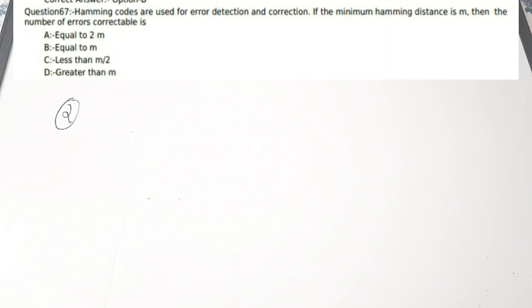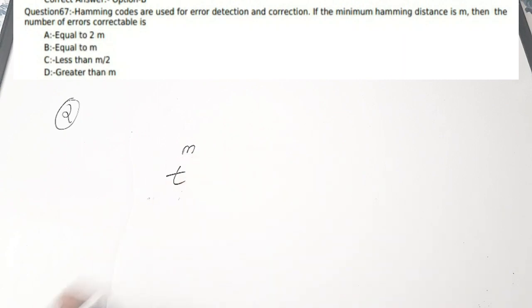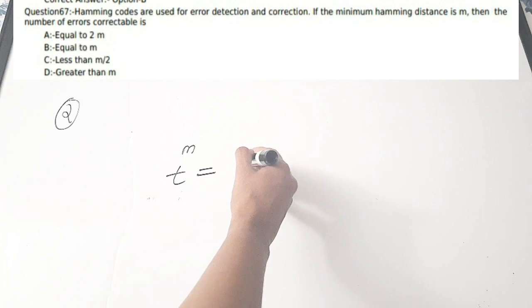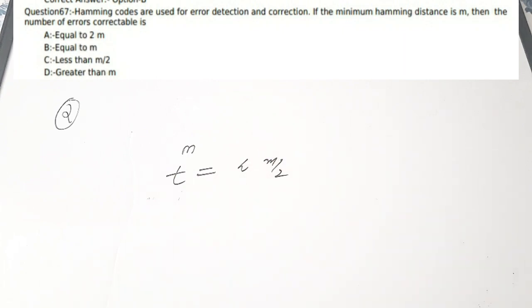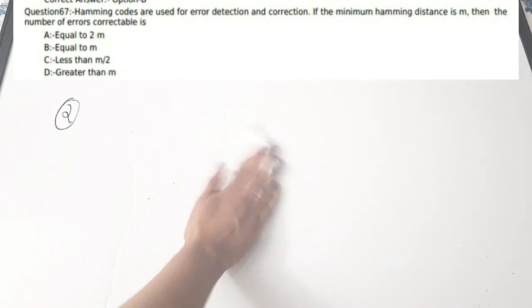There is a separate playlist for ITC where Hamming codes are discussed in detail — how to generate Hamming codes, error correction, decoding, etc. The answer: if m is the minimum Hamming distance, the number of errors correctable t is less than m/2. Correct answer is option C for the second question.